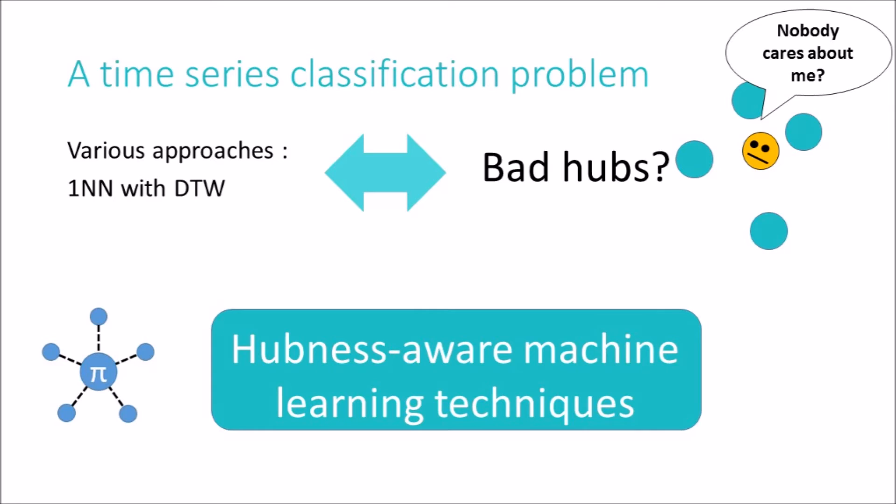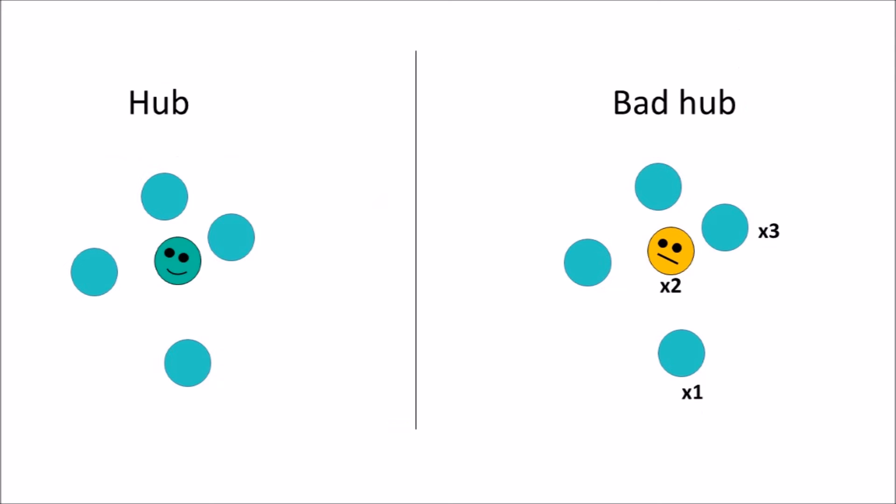But one of the recently observed shortcomings of nearest neighbor models is their suboptimal performance in the presence of bad hubs. In order to understand this, let us observe that the nearest neighbor relationship is not symmetric. For example, x2 is the nearest neighbor of x1, but it doesn't mean that x1 is the nearest neighbor of x2 as well. In this example, the nearest neighbor of x2 is actually x3. Hubs are instances that appear to be the nearest neighbor of surprisingly many other instances.